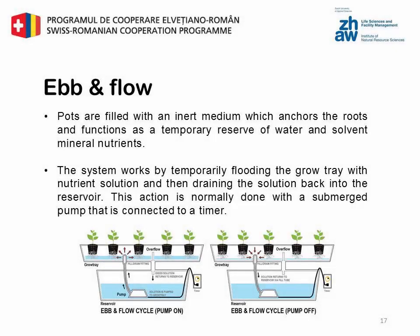Pots are filled with an inert medium which anchors the roots and functions as a temporary reserve of water and solvent mineral nutrients. The system works by temporarily flooding the grow tray with a nutrient solution and then draining the solution back into the reservoir. This action is normally done with a submerged pump connected to a timer. Periods of flooding may vary from permanent to periods of a few minutes, depending on the cultivated plant.